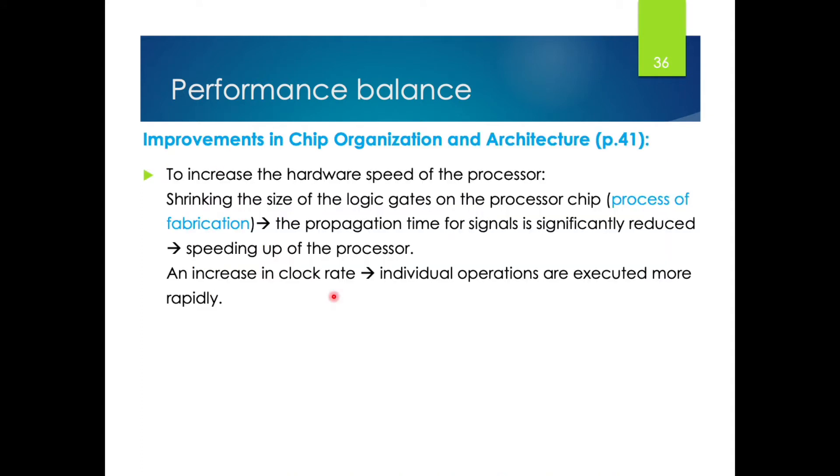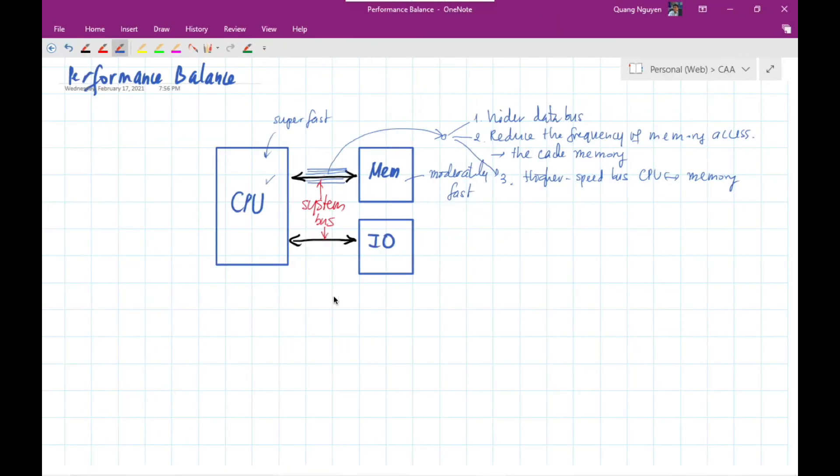And the last major, besides the improvements in data transmissions between the CPU and the memory, the data transmission between the CPU and the IO is the improvement in the chips organizations and architectures. Let's take a note here. We have two improvements. One is the improvement here. Another is improvement here, the communications between the CPU and the IO system. And the third measure, this is one, this is two, and the third measure is the improvement in the chips organization.